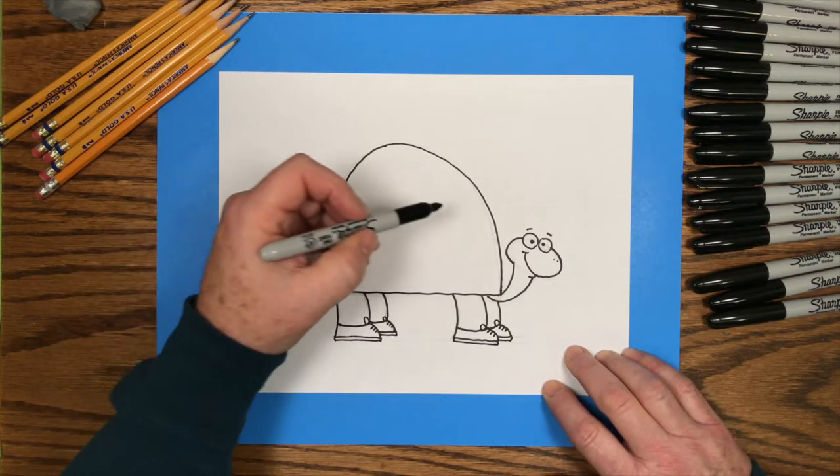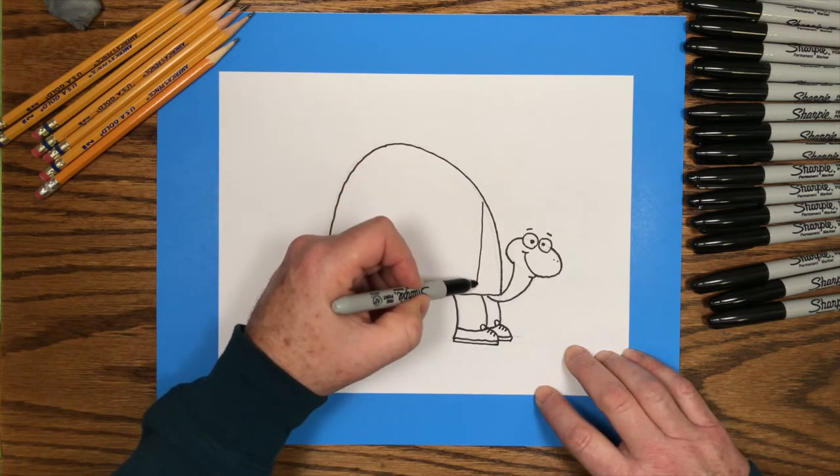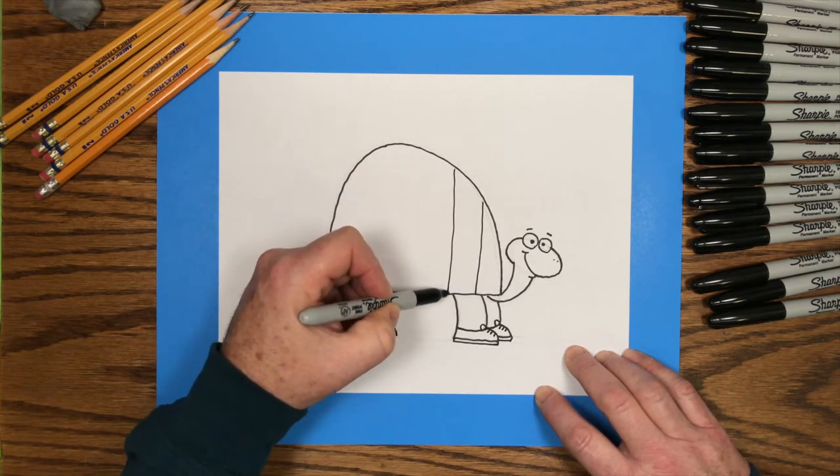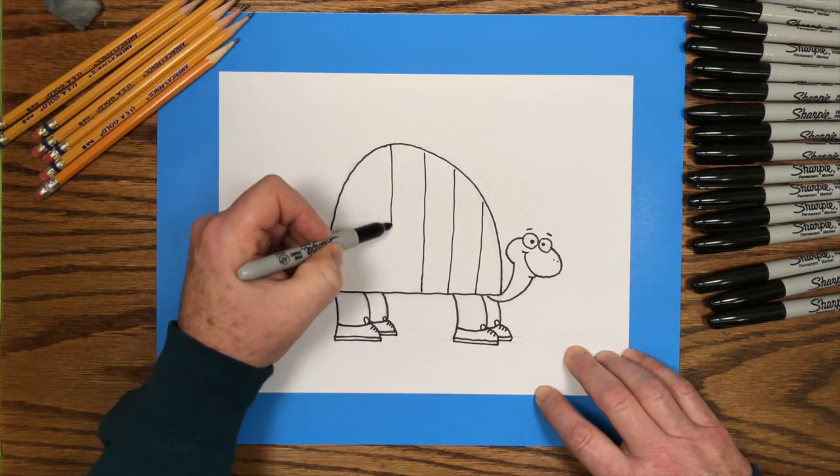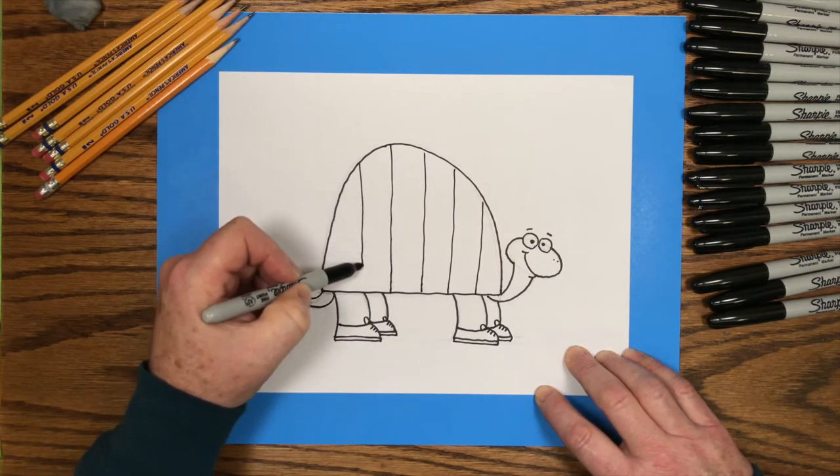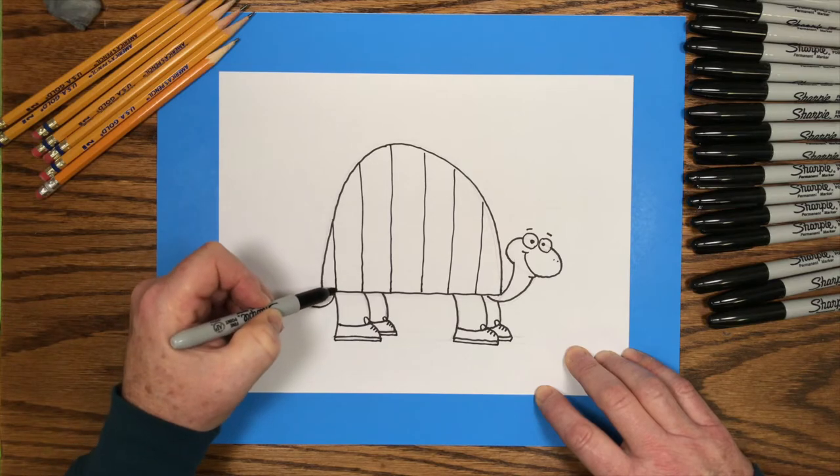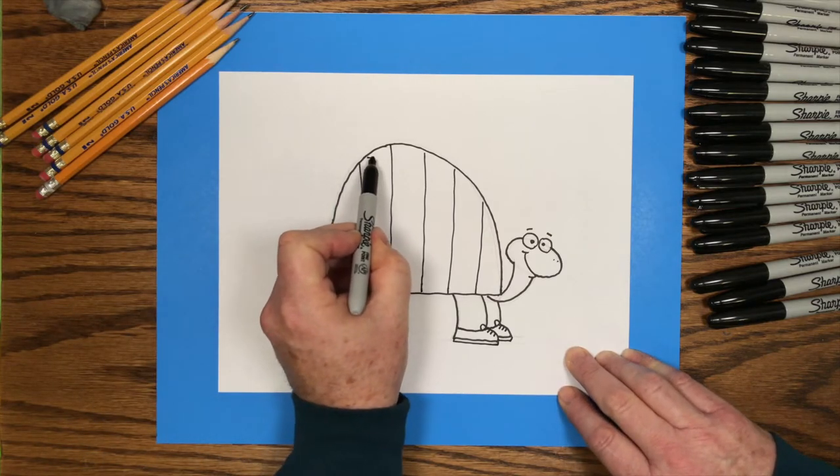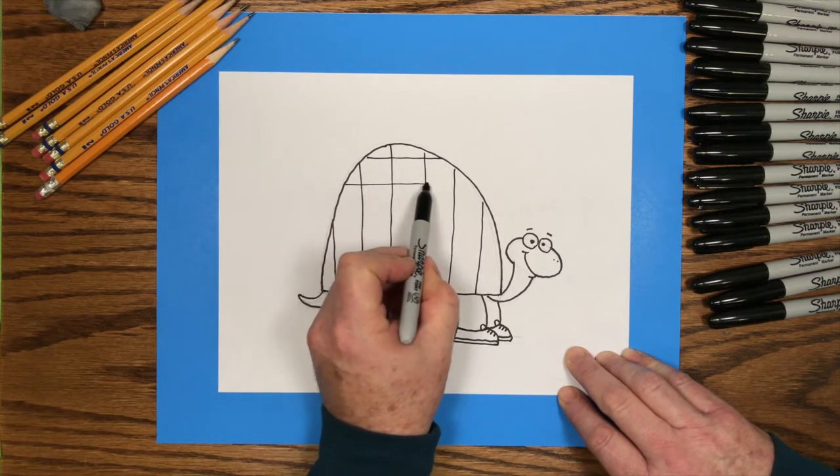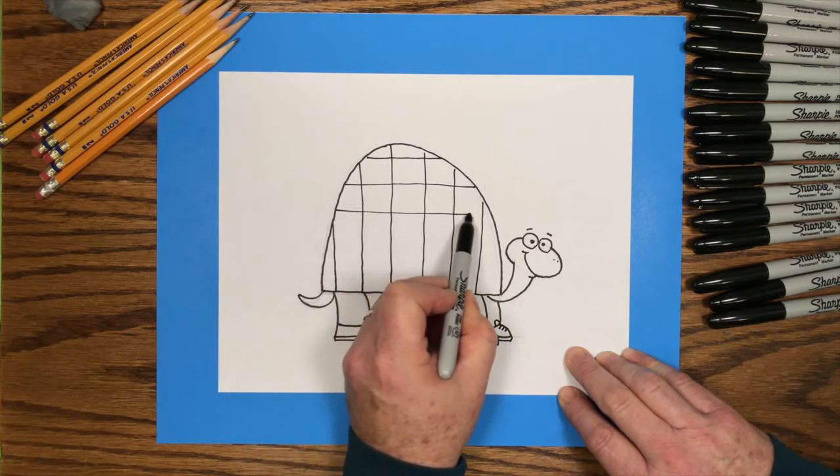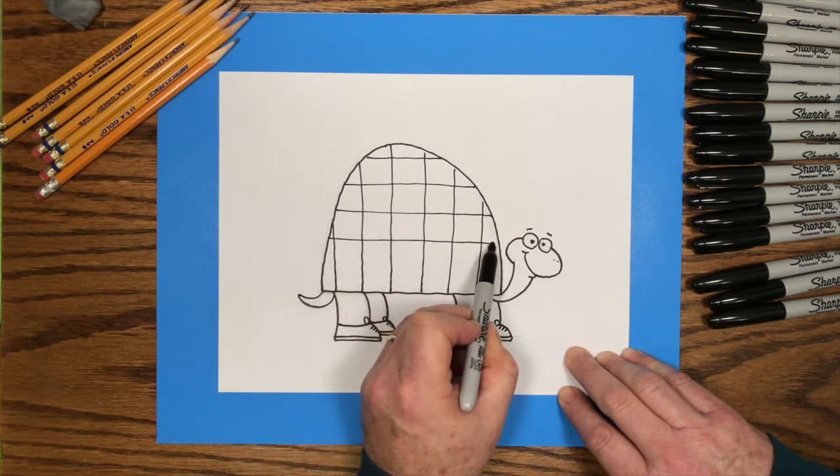And next we'll add some detail to the turtle shell. We'll draw lines straight up and down, kind of like stripes on the shell. And then we'll draw some more lines side to side, stripes going left to right, which gives us a checkerboard pattern on the turtle's shell.